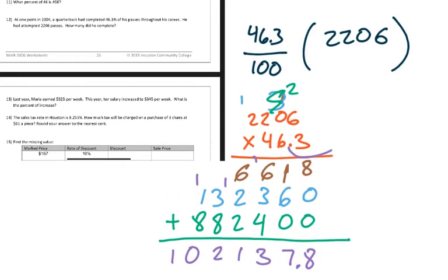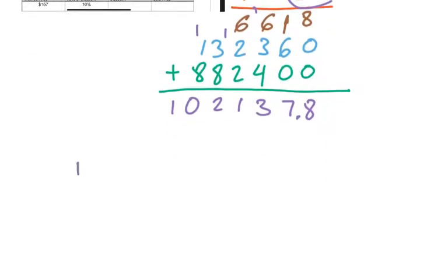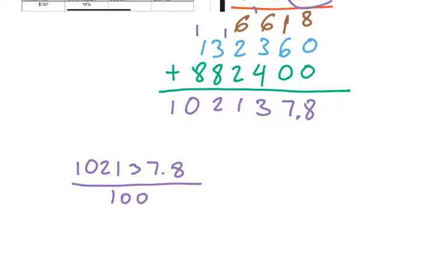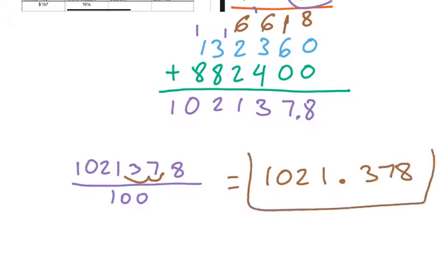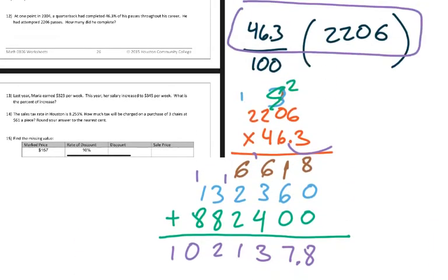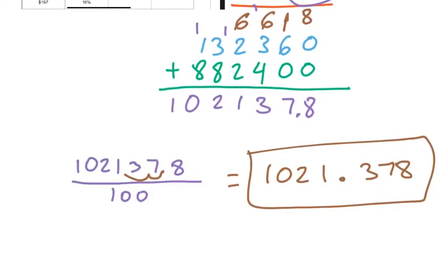Remember, we just did the numerator — we're still dividing all of this by 100. When you divide by 100, you move the decimal place two slots over, making this 1,021.378. So how many passes did he complete? He completed about 1,021. In this case we would round down, so 1,021.